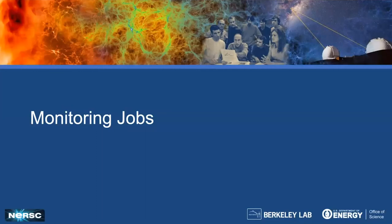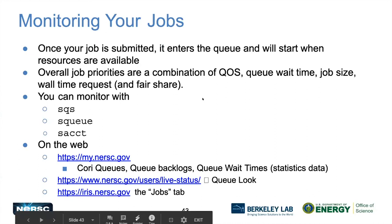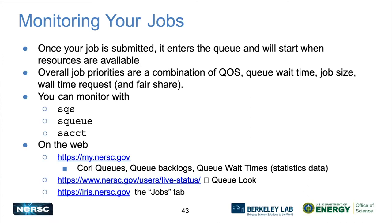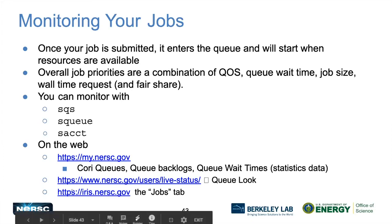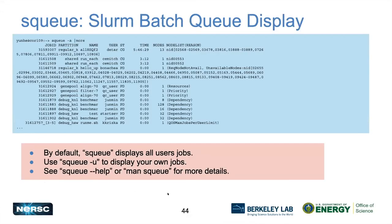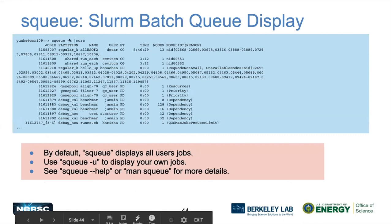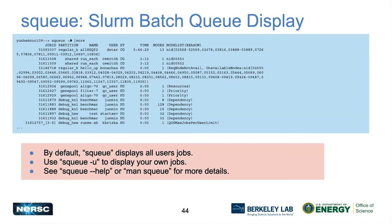For monitoring jobs, jobs are scheduled by priority and other combinations — submitting 10,000 jobs won't block other users after you submit one. Commands available include squeue (native SLURM batch queue display). squeue -a shows all users' jobs by default; squeue -u <username> shows your own jobs. On the web, my.nersc.gov lets you check Cori queues, backlogs, and queue wait times. In IRIS, click the Jobs tab to see all your jobs and how much each was charged.